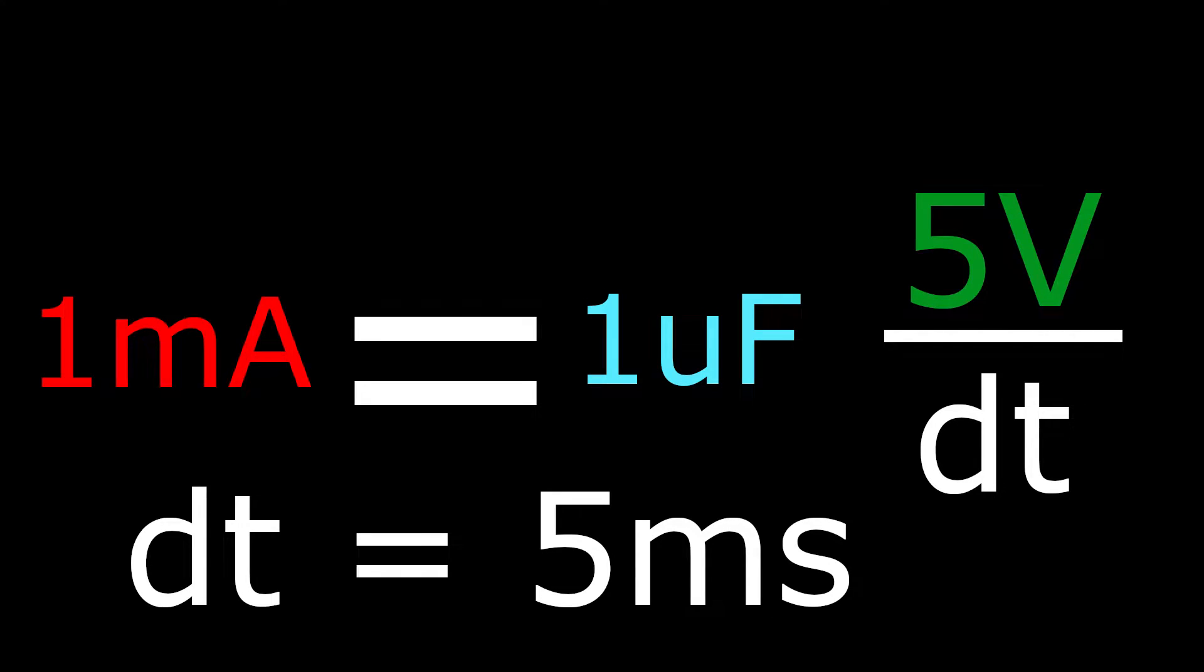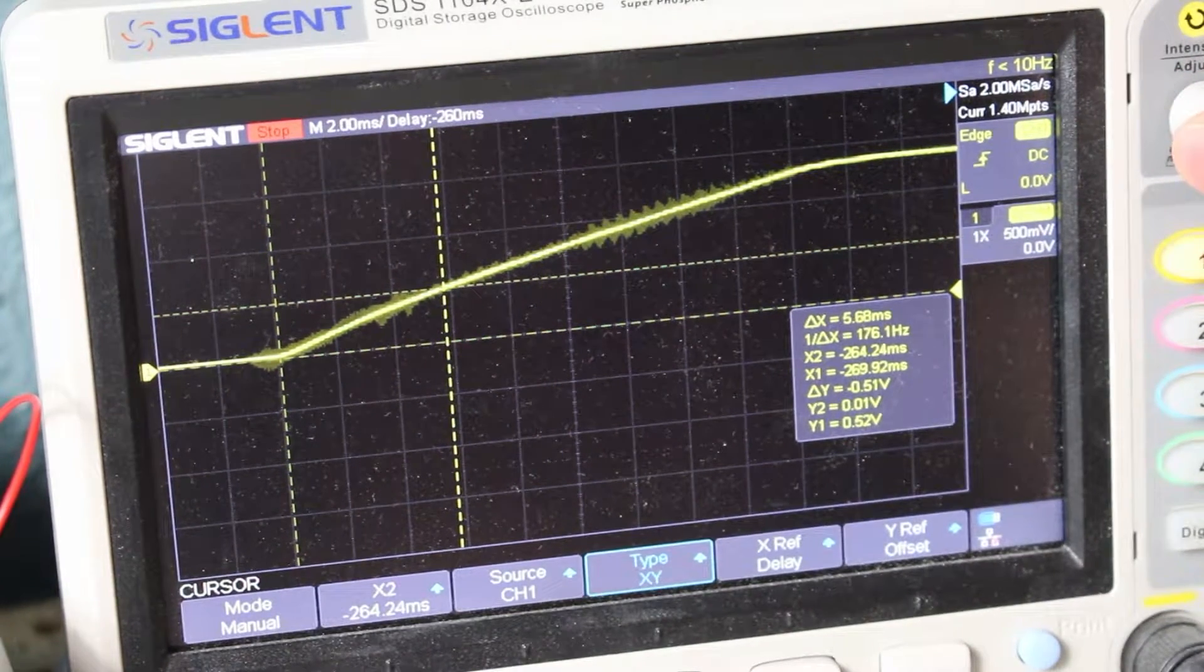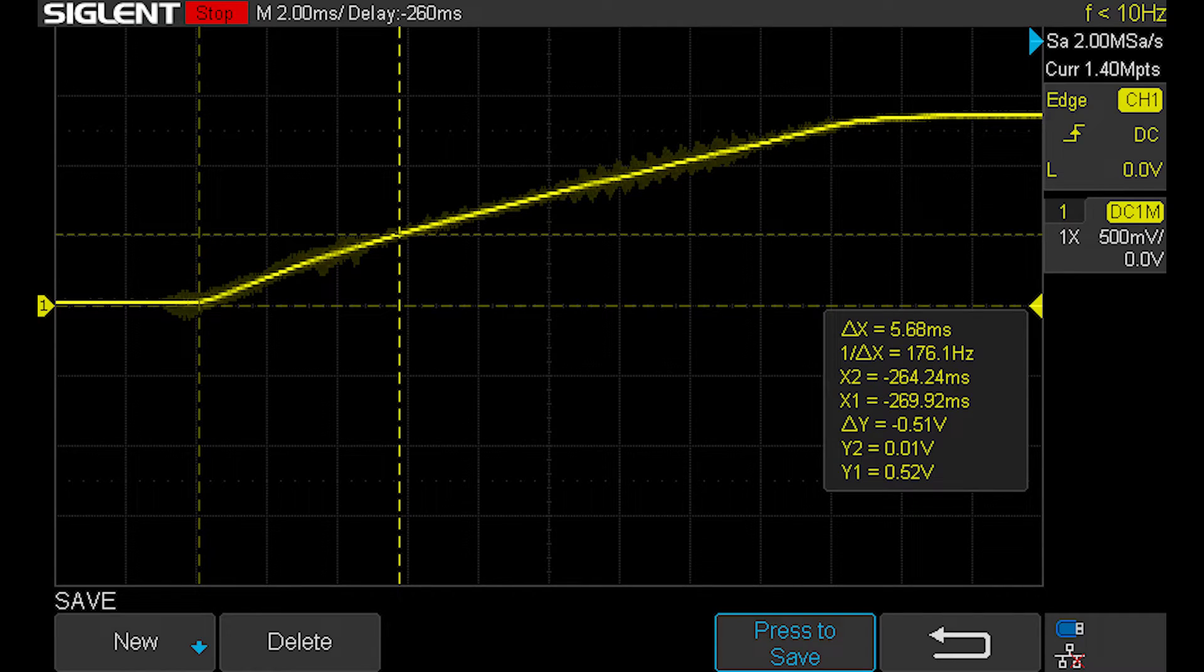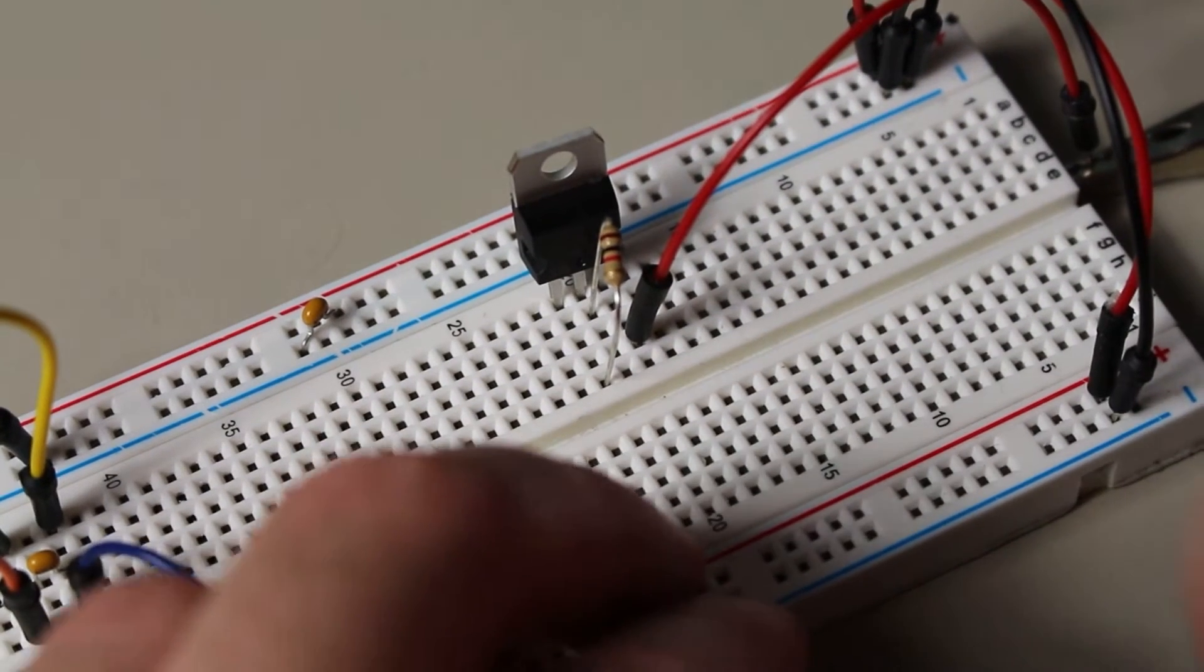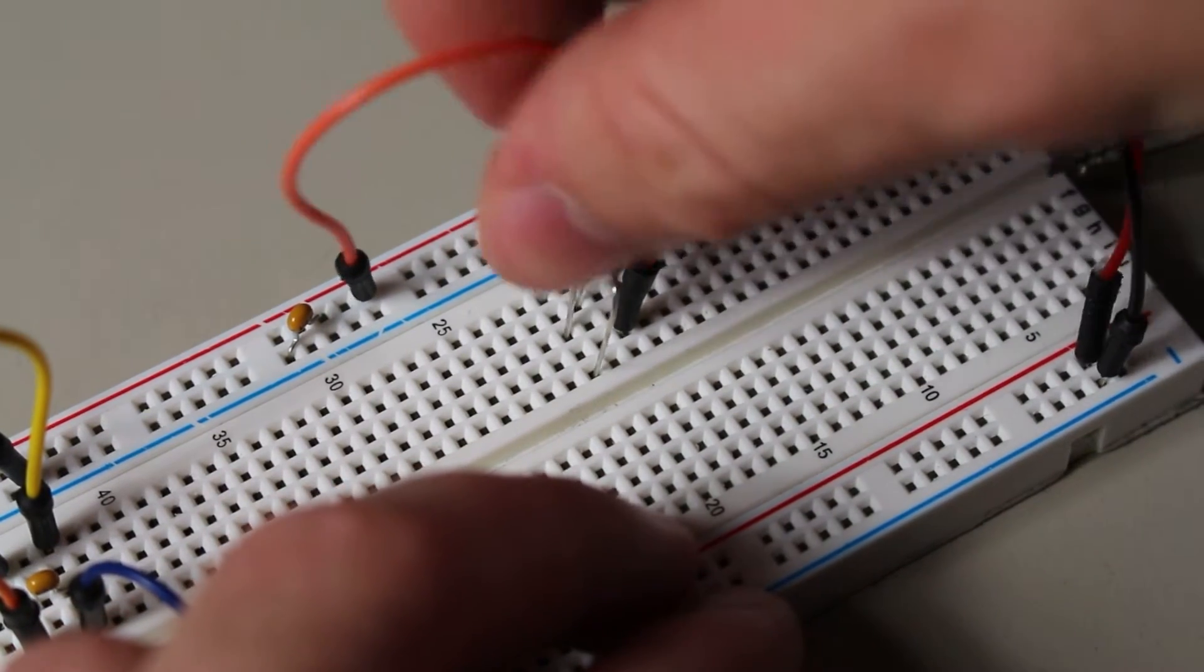Let's check this on the oscilloscope. And yes, the calculations are fairly accurate, with the real result being 5.6 milliseconds. Ideally, we should be getting a perfectly linear line. This is interesting, but constant current isn't all that common for simpler power supplies in most circuits.